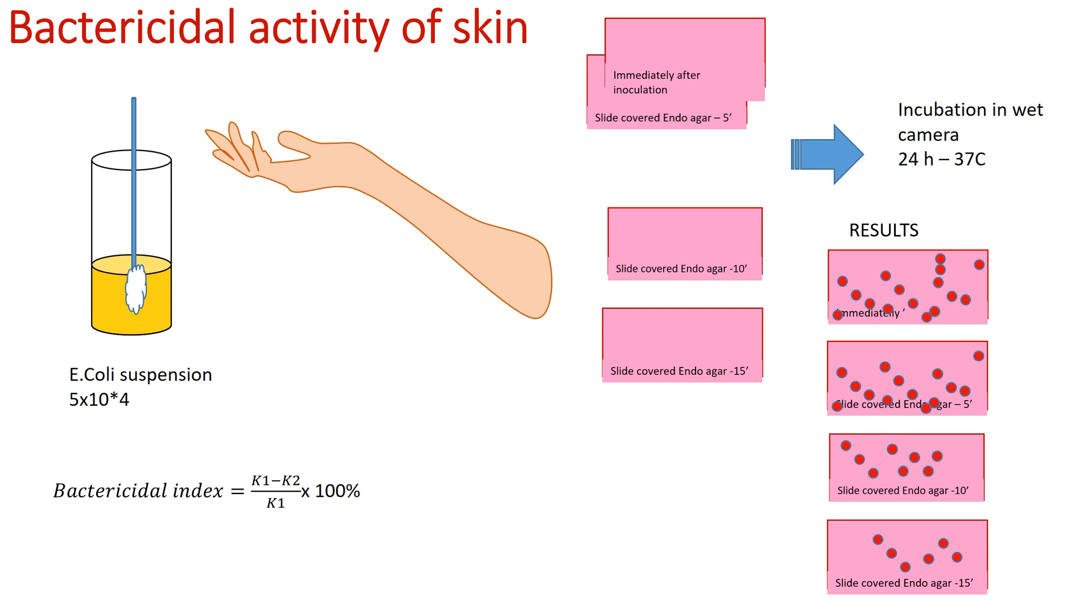Calculate the bacteriocidal index according to the formula: (K1 - K2) / K1 × 100%. K1 is the slide inoculated immediately. K2 is the slide inoculated after 15 minutes. The normal bacteriocidal index ranges from 90% to 100%.